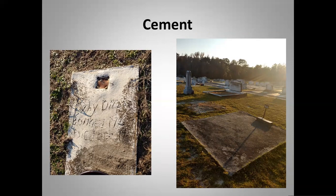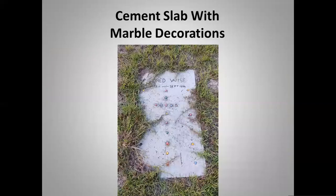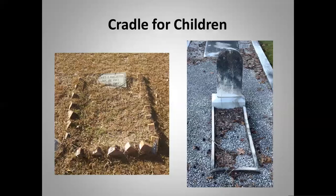Cement stones: on the left you can tell they carved the information themselves — they would build a small frame, pour the cement over where the grave was, and then carve the information. On the right is a very large cement stone for a husband and wife. Another example shows a cement slab with marble decorations, sometimes used for children, with marbles placed in there for a design and information carved at the top.